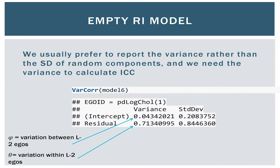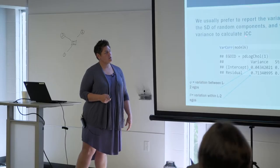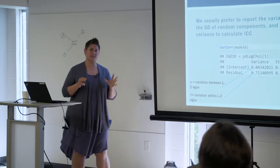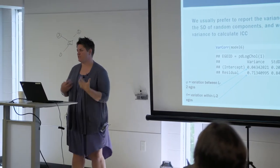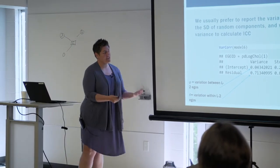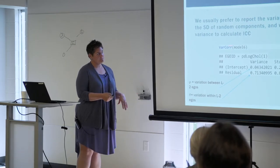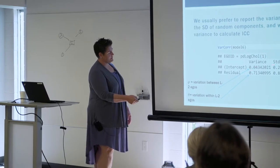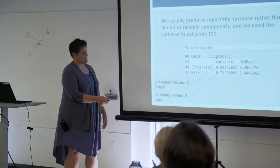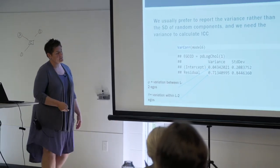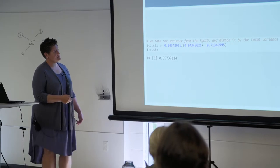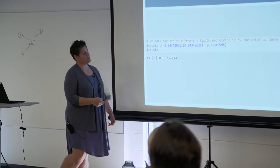We usually prefer to report the variance rather than the standard deviation of random components, and we need the variance to calculate the intraclass correlation — that really interpretable correlation of observations within clusters. We can get that in R, then calculate it as our variance between level-two egos over our variation within level-two egos. The formula is between over between plus within.